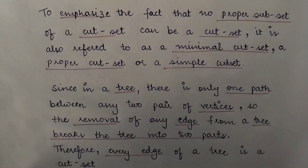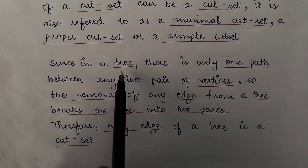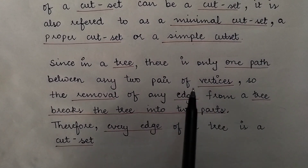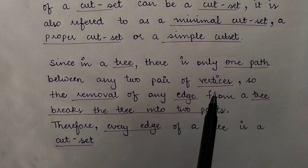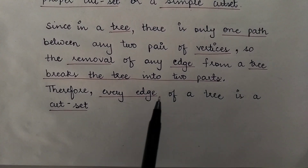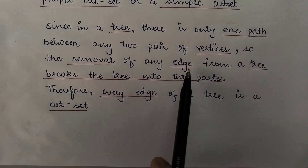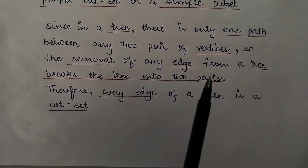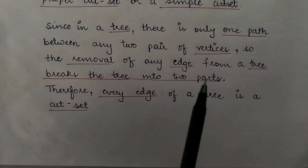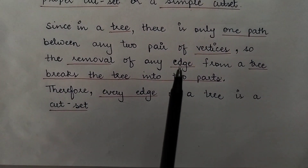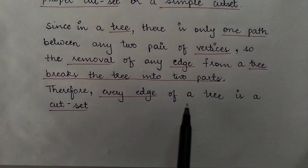In a tree, since there is only one path between any two vertices — which is why we call it a minimally connected graph — if I remove any single edge from a tree, it will immediately break the tree into two parts, because that was the only path connecting those vertices. Therefore, in the case of a tree, the removal of a single edge always divides the tree into two separate components, and hence every edge of a tree is a cut set.